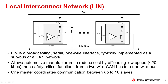The network relies on a single master communicating with up to 16 slave devices. LIN is a broadcast, serial, one-wire interface, which is typically implemented as a sub-bus of a CAN network. It allows automotive manufacturers to reduce costs by offloading low-speed, non-safety critical functions from a two-wire CAN bus to a one-wire bus.